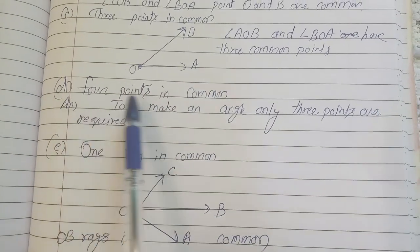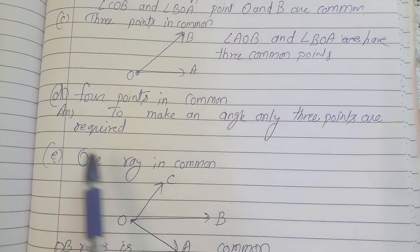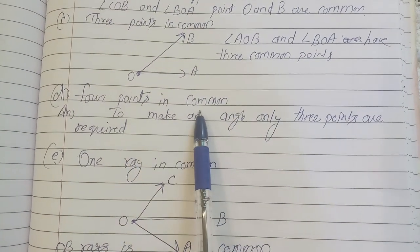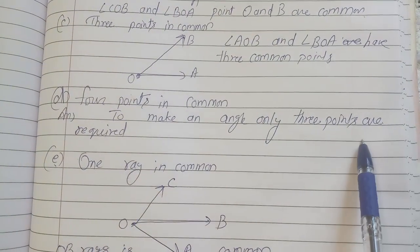Question D: Four points in common. Answer: To make an angle only three points are required, so four points common is not such a condition to make a perfect angle.